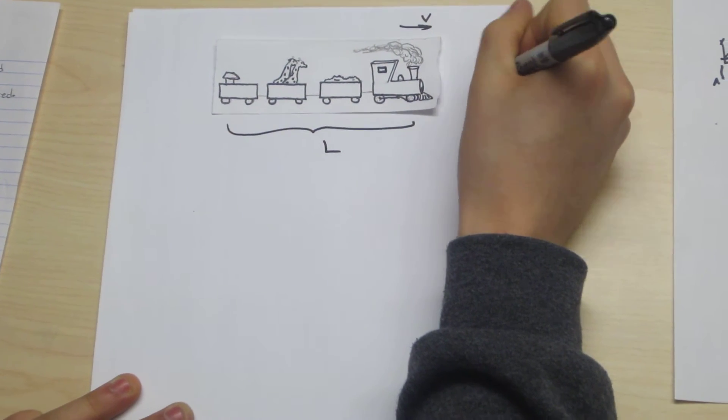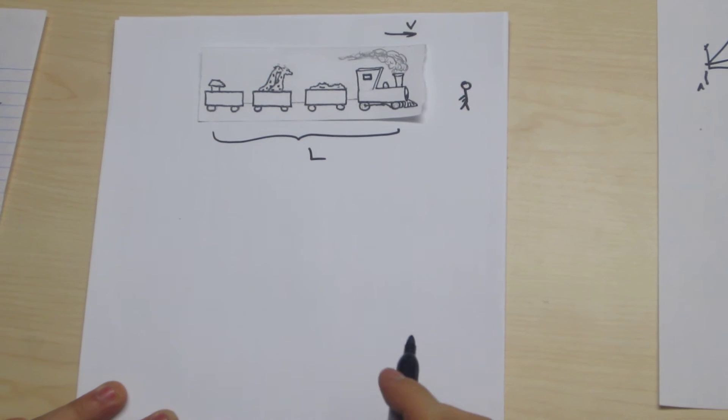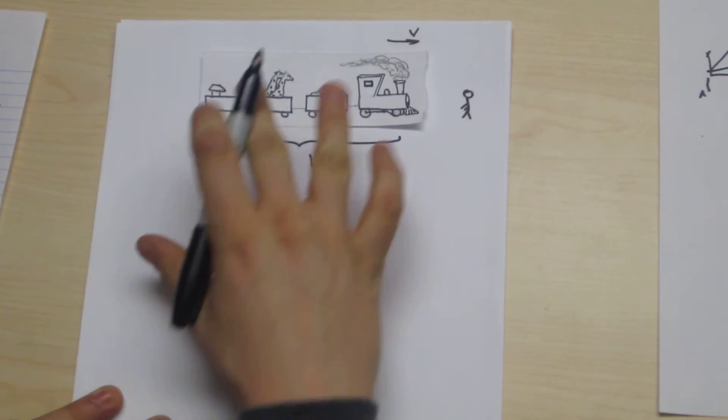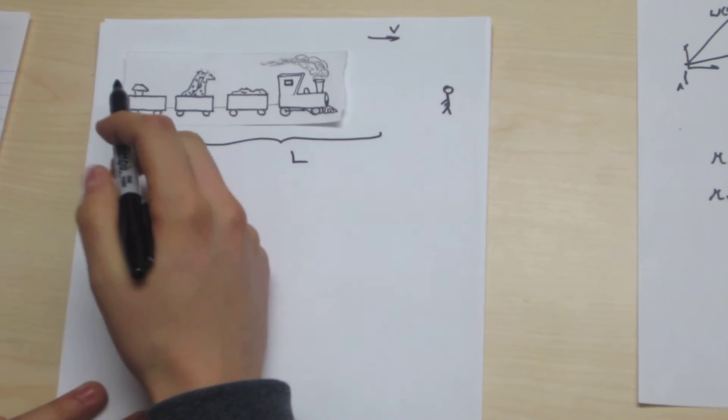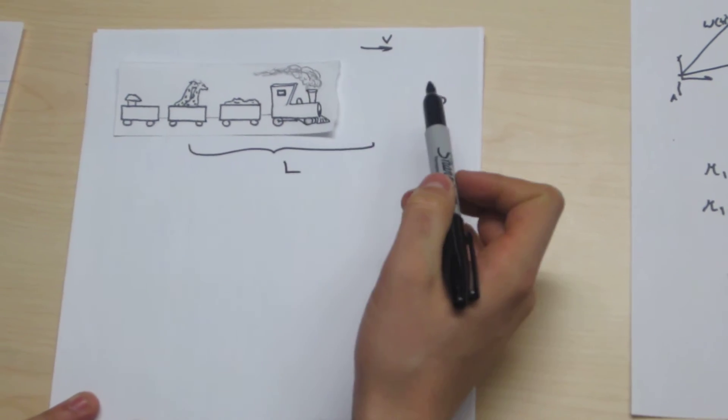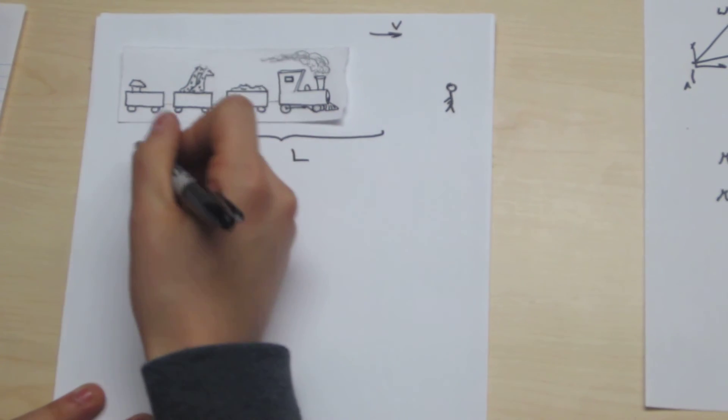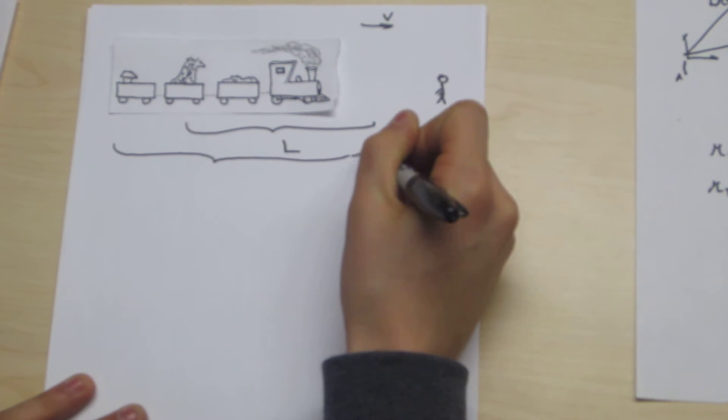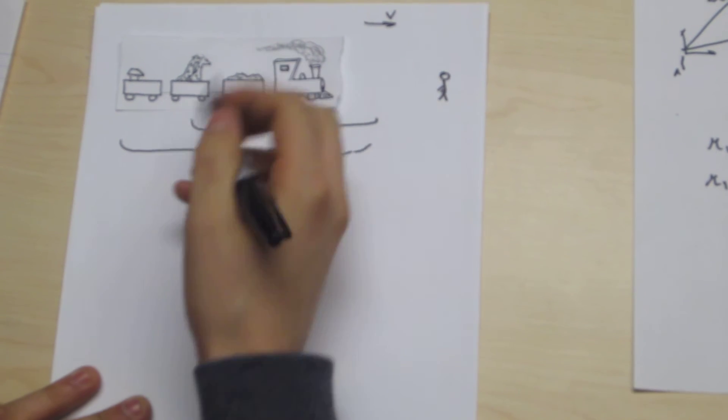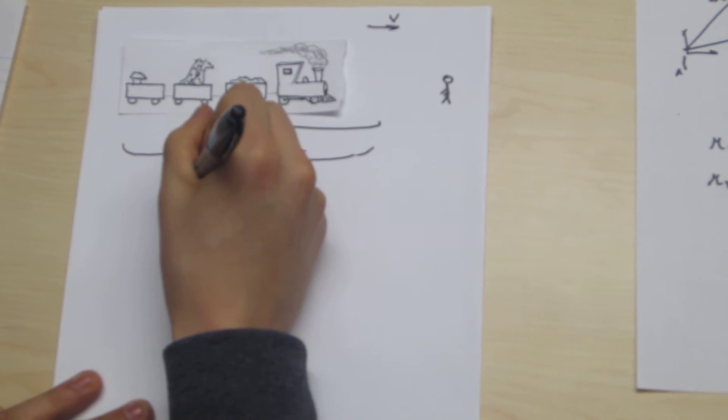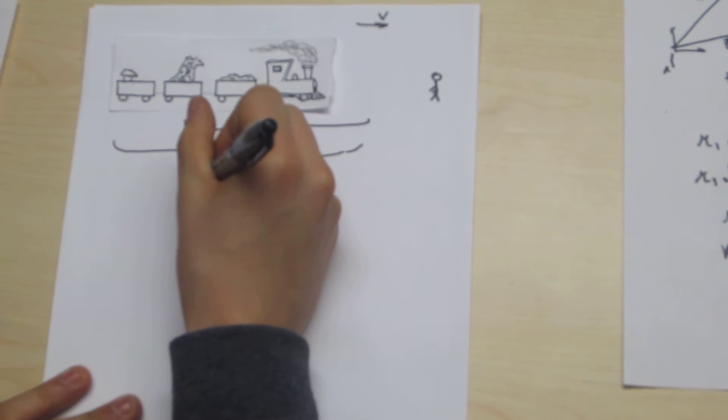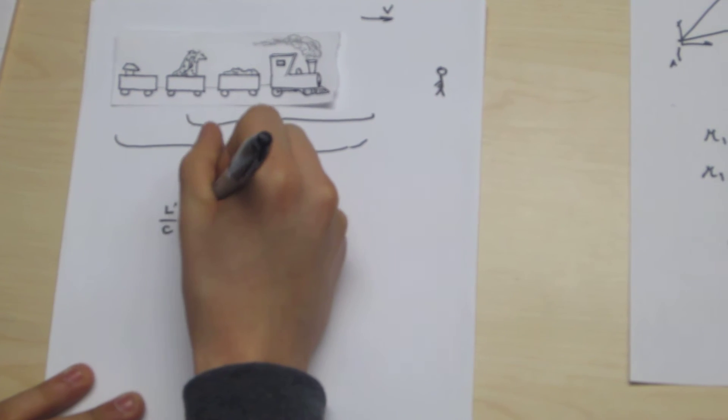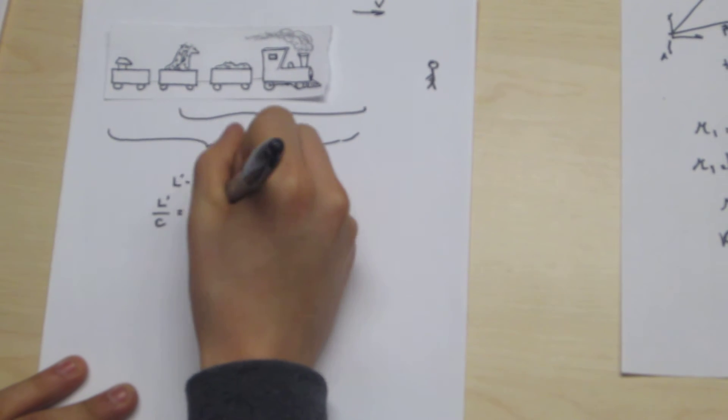Now our train has length l and is moving at speed v. And here we are over here watching. Now because electromagnetic information takes time to travel, the light you see from the caboose leaves earlier than the light that you see from the front of the train. And in the time it takes the train to move a distance l prime, the train is able to move a distance l prime minus l, such that l prime over c is equal to l prime minus l over v.